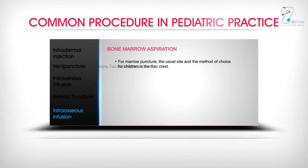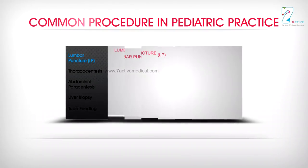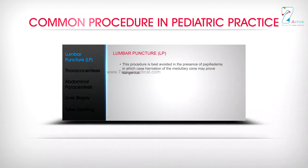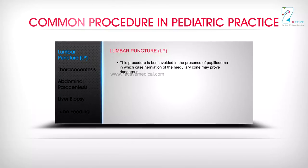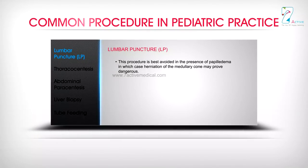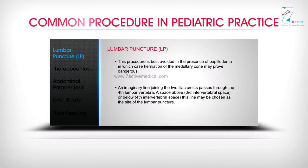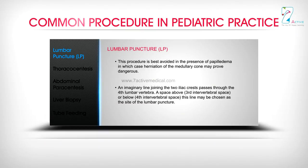Bone marrow aspiration: For marrow puncture, the usual site and method of choice in children is the iliac crest. Sternal puncture is hardly required in children. Lumbar puncture: This procedure is best avoided in the presence of papilledema, in which case herniation of the medullary cone may prove dangerous. An imaginary line joining the two iliac crests passes through the fourth lumbar vertebra. A space above (third intervertebral space) or below (fourth intervertebral space) this line may be chosen as the site of the lumbar puncture.